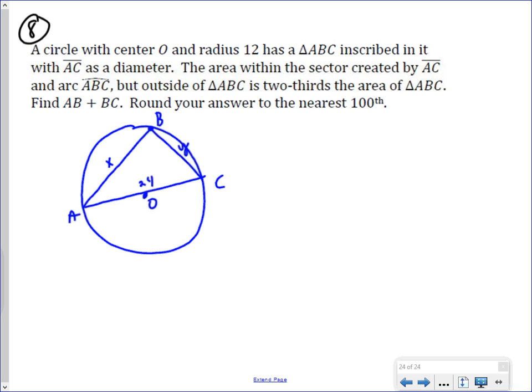The first thing is, you need to know that if you have a diameter in a triangle, then that means that diameter is the hypotenuse of a right triangle. So we know that triangle ABC here is going to be a right triangle with hypotenuse of 24.